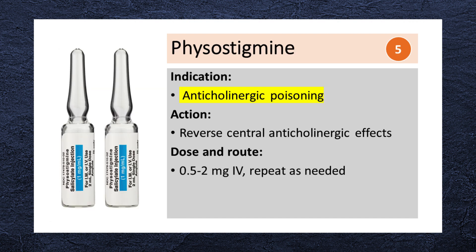Physostigmine is an antidote for anticholinergic poisoning. It reverses the central effects of anticholinergic intoxication. The initial dose is 0.5-2 mg IV over 5 minutes and may be repeated every 20-30 minutes if required.